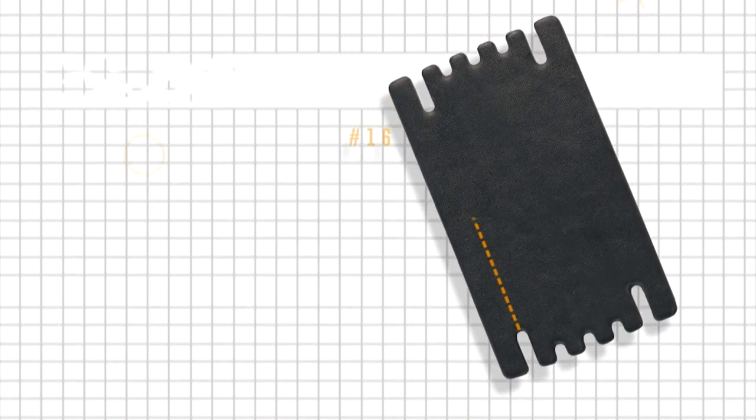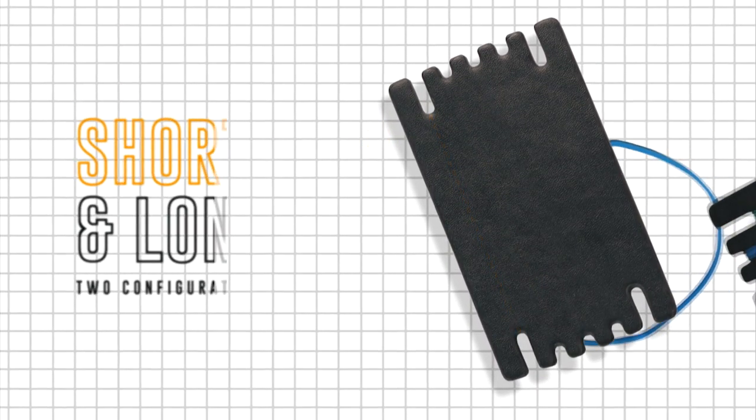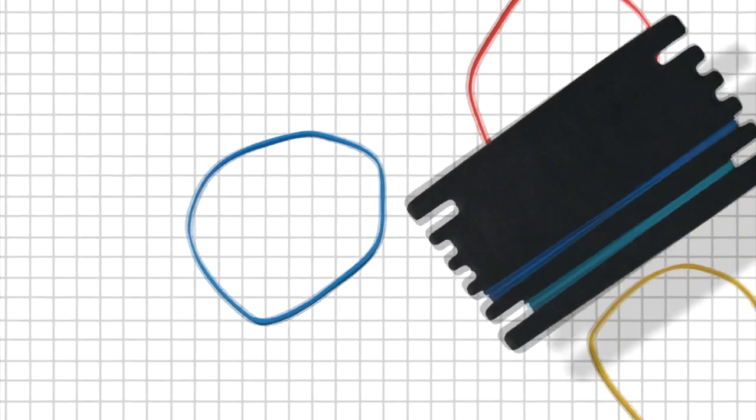Also, the slot comes in 2 configurations, short and long. This allows you to store various rubber bands for different effects.